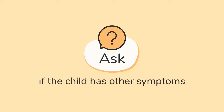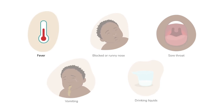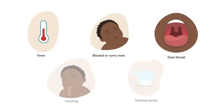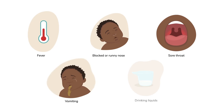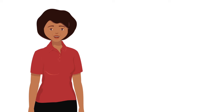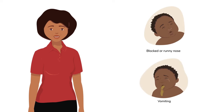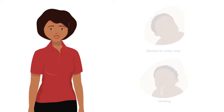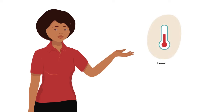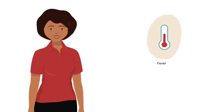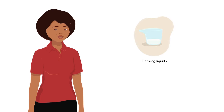Number two — find out if the child has other symptoms. You can ask: Does he have a fever, a blocked or runny nose, or a sore throat? Is he vomiting? Is he able to drink liquids normally? If the child has other symptoms with the cough, like a blocked or runny nose and vomiting, it can be a viral infection. But if the child has a cough, fever, and no other symptoms, it is more likely to be a lower respiratory infection like pneumonia. If the child cannot drink enough to stay hydrated, it can be a danger sign.